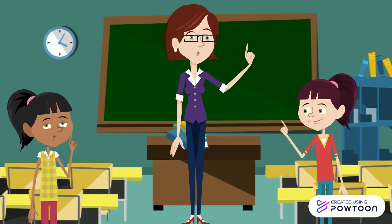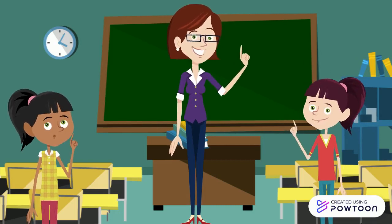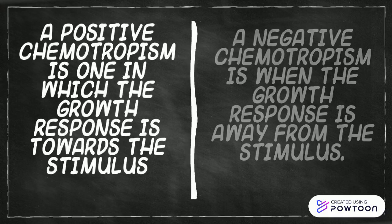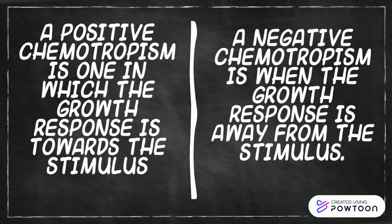Miss, I did not understand the term positive chemotropism. Then is there a negative chemotropism? There are two types of chemotropism: positive chemotropism and negative chemotropism. Positive chemotropism is one in which the growth response is towards the stimulus, while negative chemotropism is when the growth response is away from the stimulus.